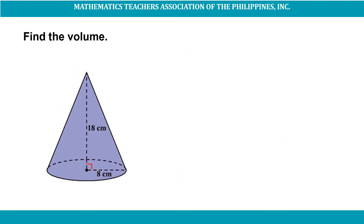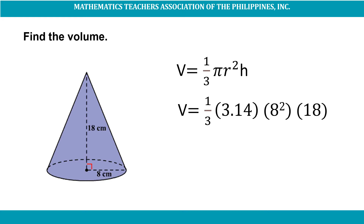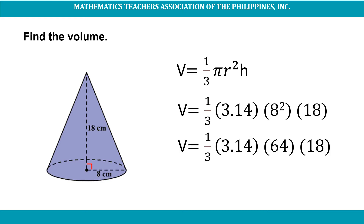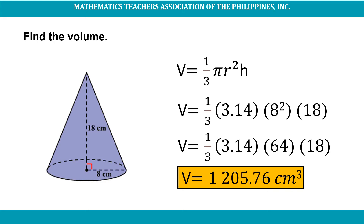This time, let's find the volume of a cone given its height of 18 centimeters and its radius of 8 centimeters. The formula in finding the volume of a cone is V = (1/3)πr²h. Substituting: V = (1/3) × 3.14 × 8² × 18 = (1/3) × 3.14 × 64 × 18. The volume of this cone is 1,205.76 cubic centimeters.